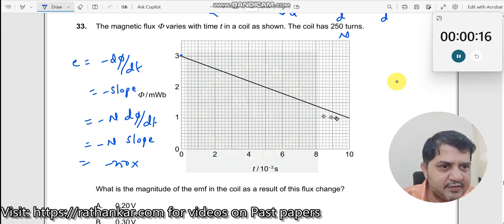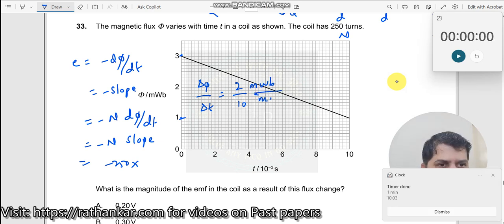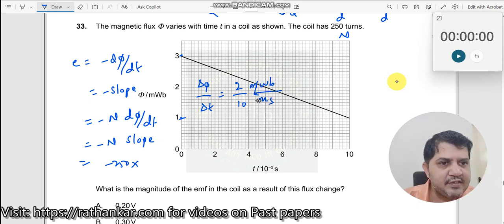I take this point 3 and this point as 1. So delta phi by delta t is equal to 3 minus 1 is 2, time 10 minus 0 is 10. 10 over here. This is what? 2 milliWeber. MilliWeber divided by what is this? Milliseconds. So this milli milli goes away, Weber per second, 2 by 10 which is 1 by 5.